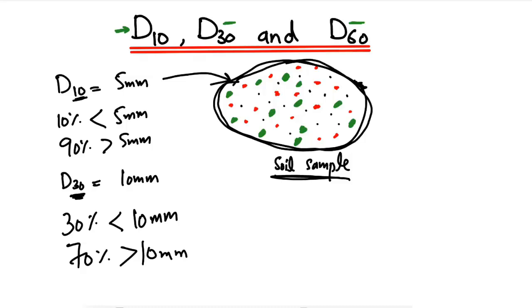It's really simple to understand. You just have to know the subscript value. For example, D10 means 10 percent, D30 means 30 percent. These are the lowest values and the other is the biggest value.